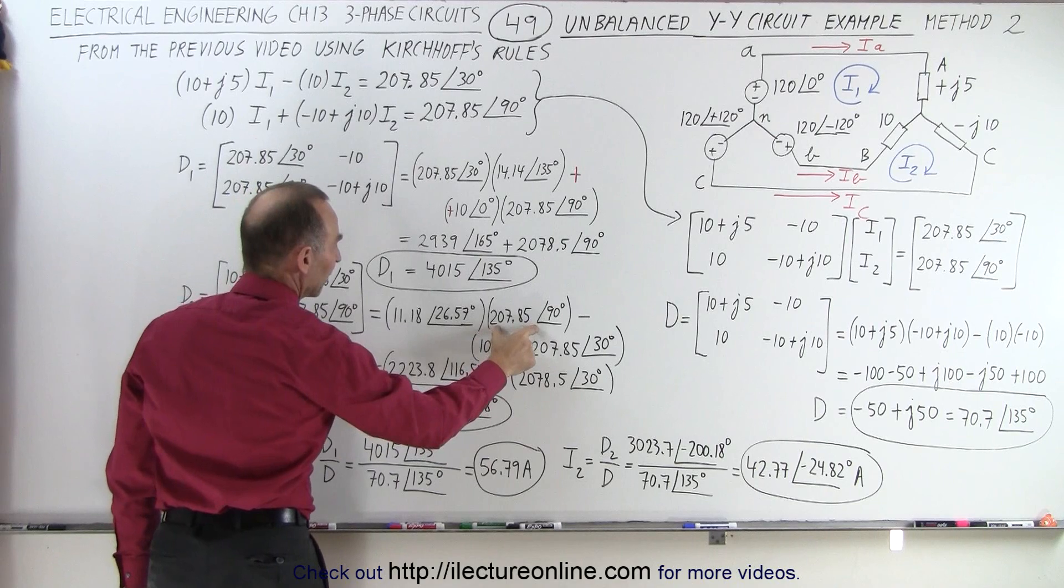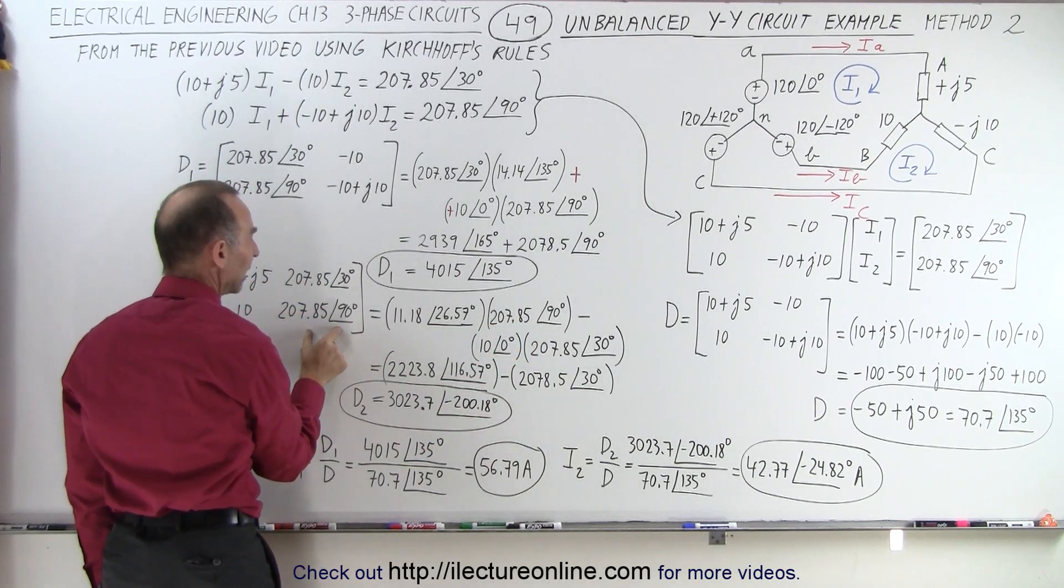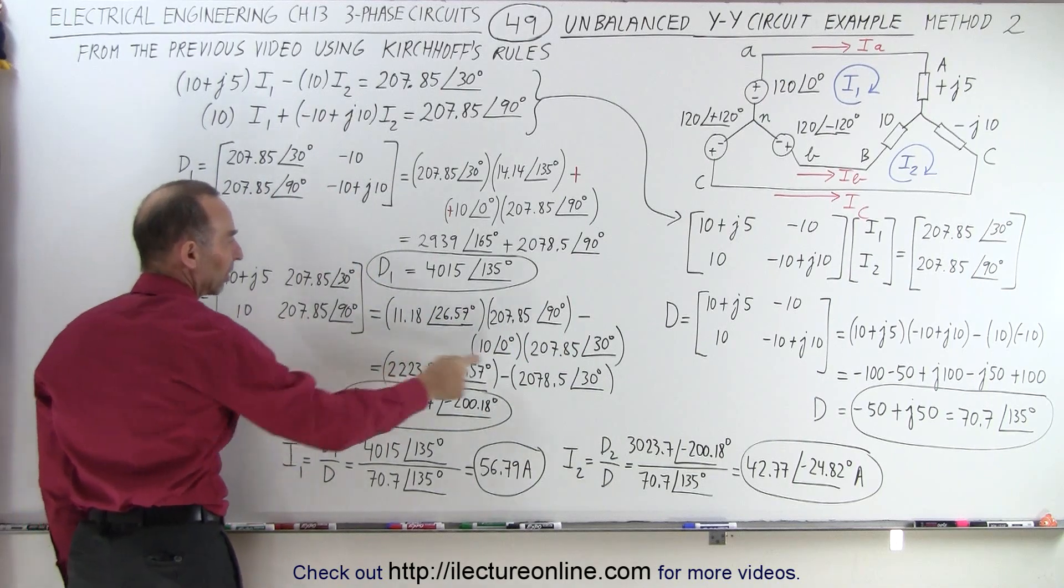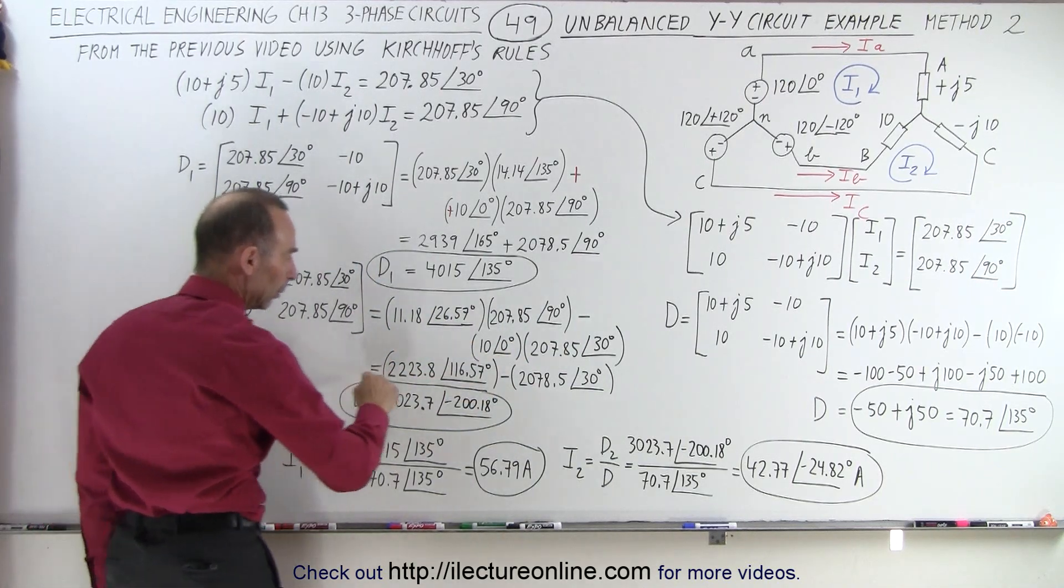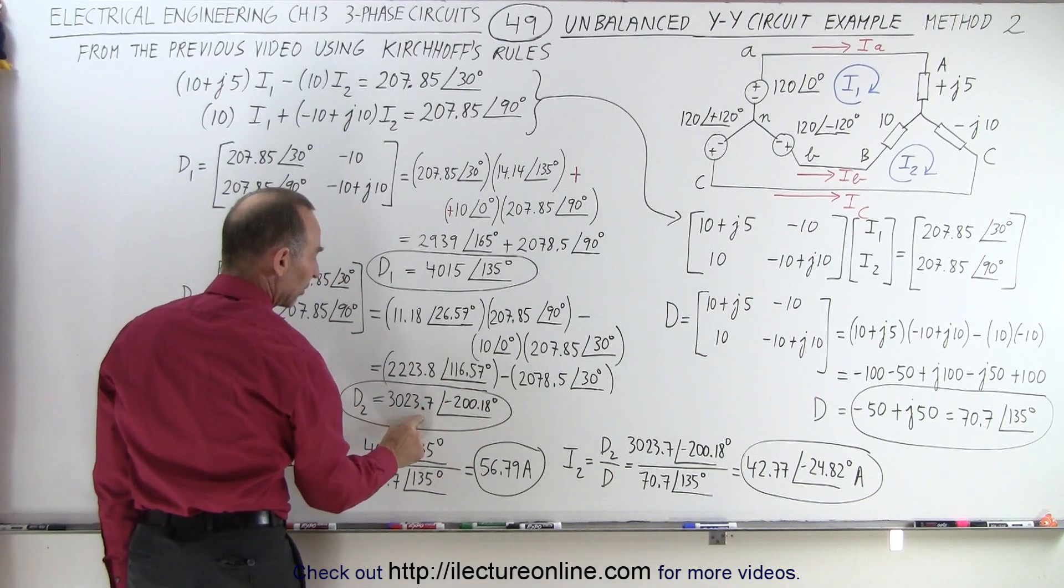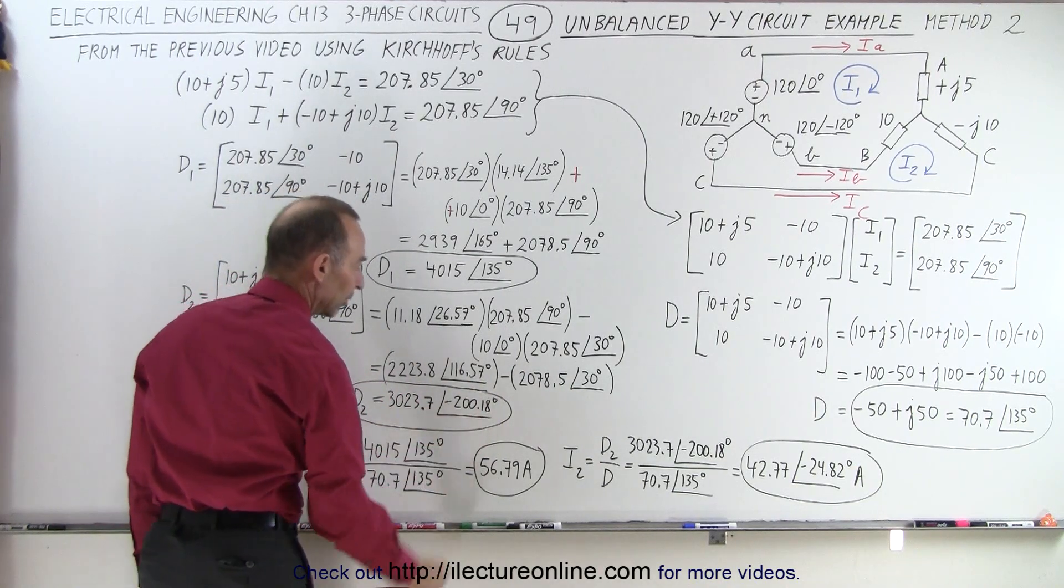We multiply that times 207.85 with a phase angle of 90 and subtract when we multiply these two together. Notice this becomes 10 with a phase angle of 0. We multiply this together, simplified it becomes 3023.7 with a phase angle of minus 200.18.